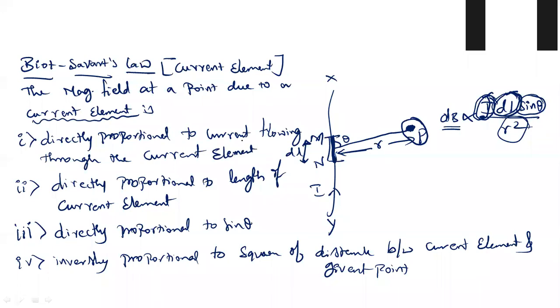According to Biot-Savart's law, the magnetic field at a point due to a current element is directly proportional to: current flowing through the current element, length of the current element, sin theta, and inversely proportional to the square of the distance between the current element and the given point.